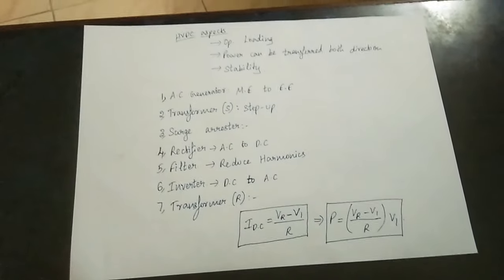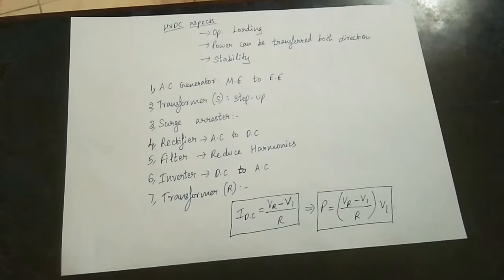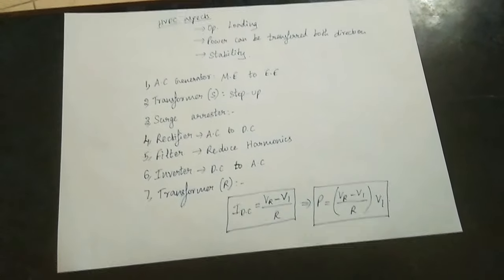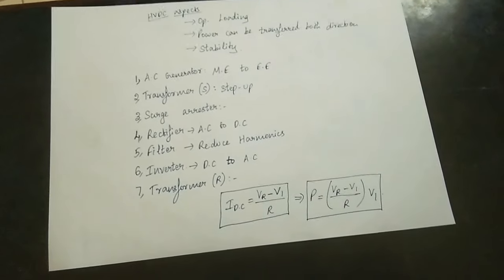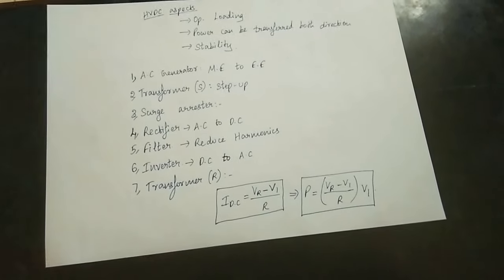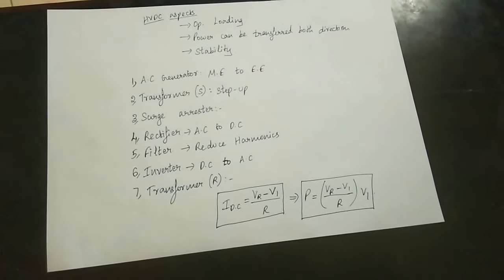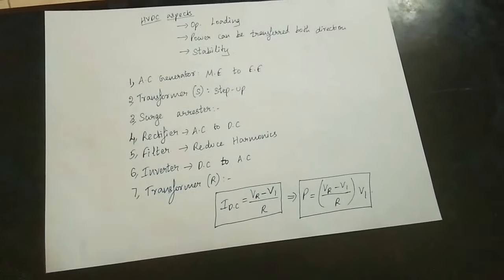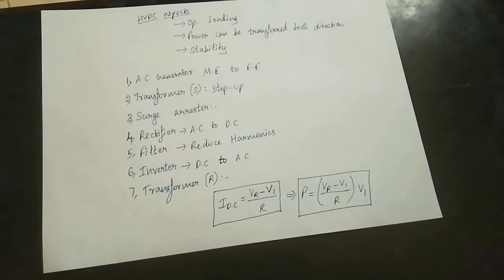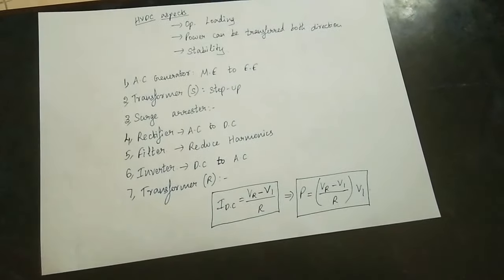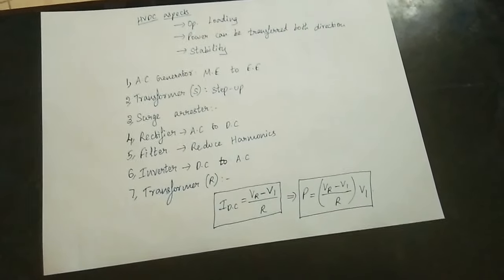The main aspects of HVDC include optimum loading — operating loading is very important. Power factor is also important. In DC transmission, if there is a disturbance, the current load can be high, so for optimum loading we can allow its loading within limits.